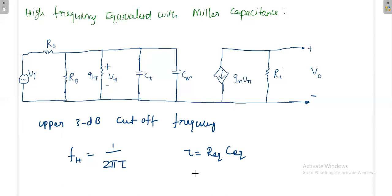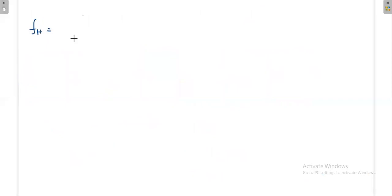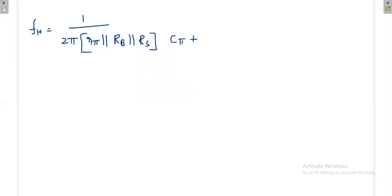To find τ, first determine C-equivalent: Ceq = Cpi + CM. Then remove the capacitances and the source effect, and measure the resistance looking from the capacitor terminals. This resistance R-equivalent equals Rs parallel with Rb parallel with Rpi. With both Req and Ceq known, the upper cutoff frequency is fH = 1 / (2π · (Rs ∥ Rb ∥ Rpi) · (Cpi + CM)).